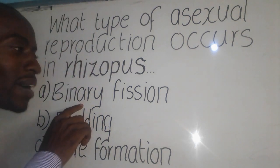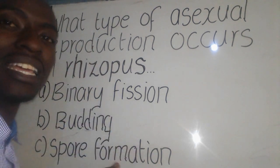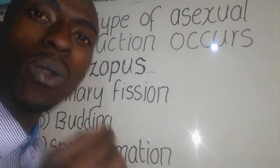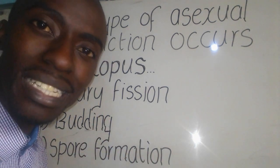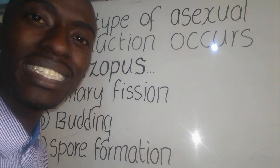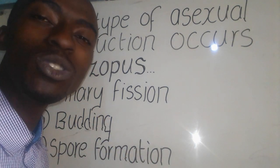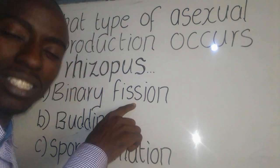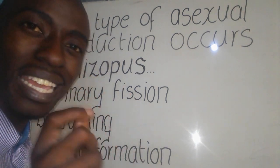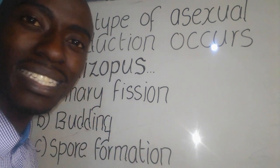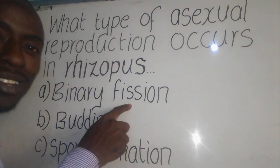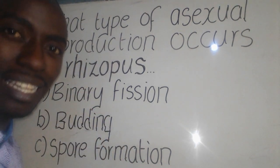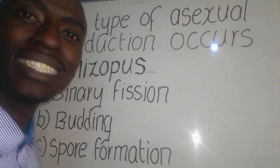Binary fission is a type of asexual reproduction where one organism divides itself into two new daughter cells. This is most commonly seen in bacteria and amoeba, so this option is not the answer.